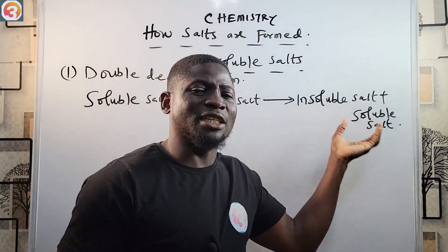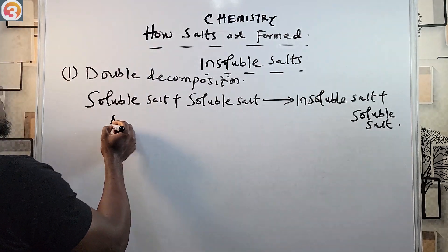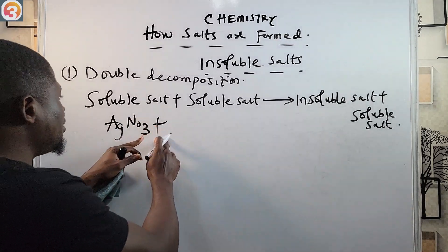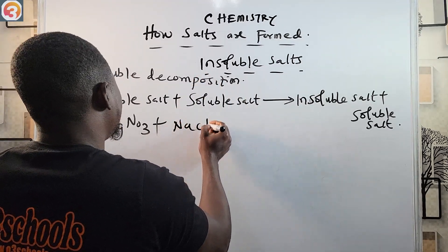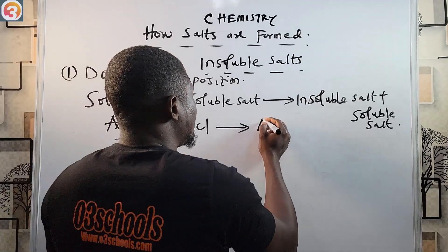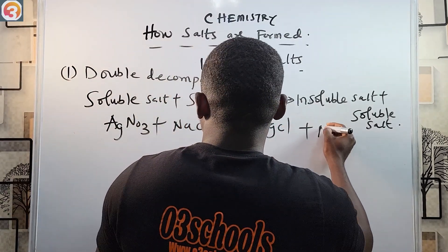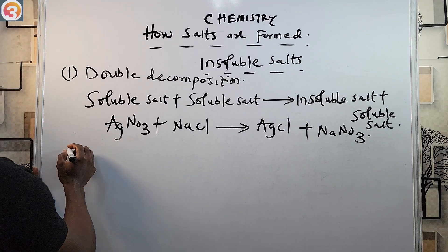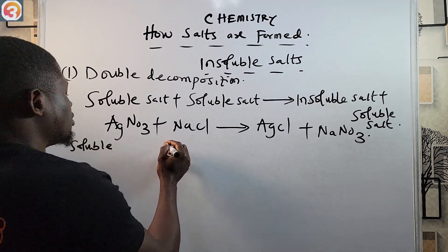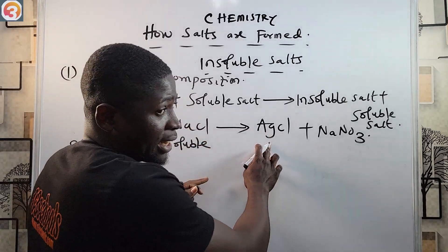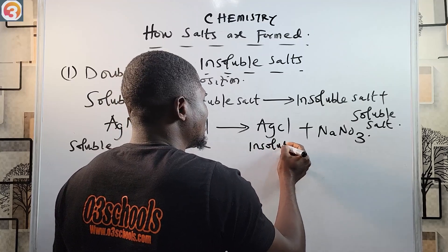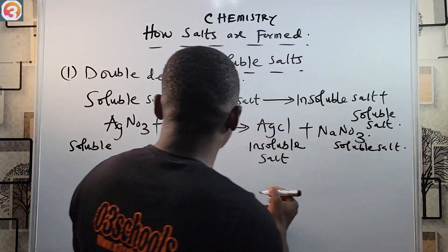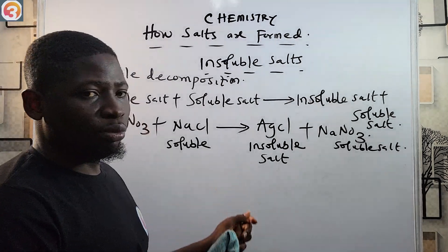Let's see an example. Silver nitrate (AgNO3), which is a soluble salt, is reacted with another soluble salt — sodium chloride (NaCl). This gives us silver chloride (AgCl) plus sodium nitrate (NaNO3). Silver nitrate is soluble, sodium chloride is soluble, but silver chloride (AgCl) is the insoluble salt produced, while sodium nitrate is the soluble salt.